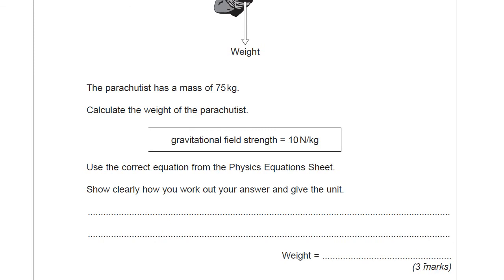See there's no unit there, means there is a mark for the unit. There you go, have a go at that, find your physics equation sheet and have a go at that. Okay, welcome back. So the correct equation from the physics equation sheet was weight is mass times gravitational field strength. So this should be quite an easy one for you.